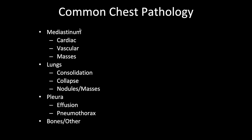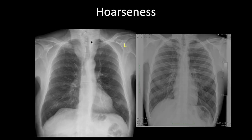Now let's look at some examples of pathology. With a history of hoarseness, you may notice widening of the paratracheal stripe and mass effect on the trachea, extending up into the neck. This likely represents a thyroid mass with intrathoracic extension, but could also represent lymphadenopathy.